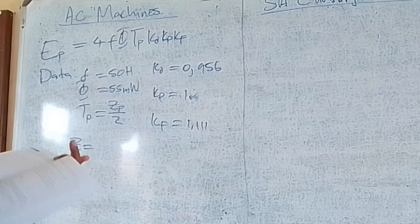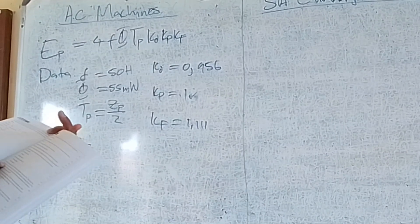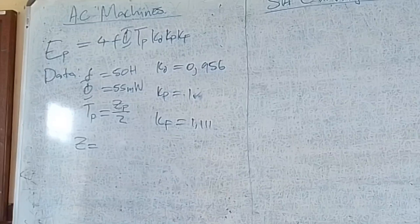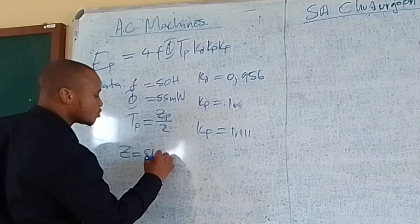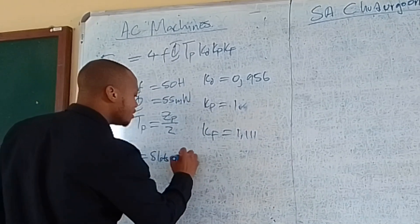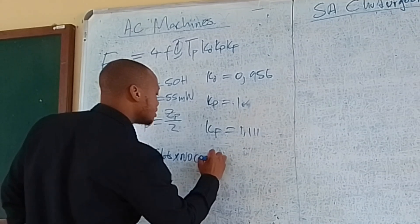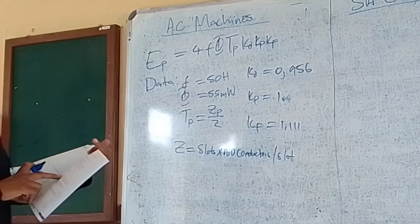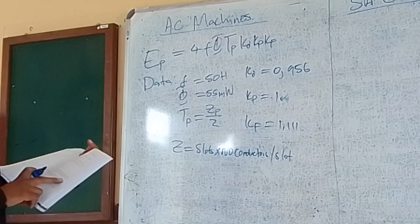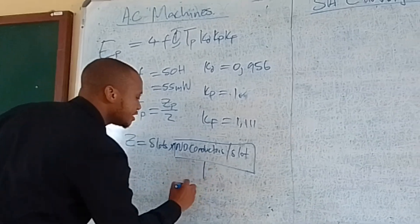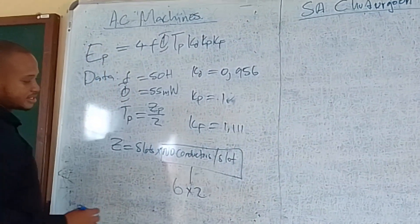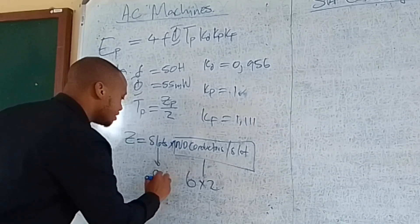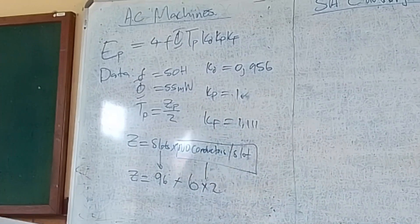The statement says the stator has a total of 96 slots, and it is a 6-turn coil which is fully pitched and double layer. Z is the product of the number of slots multiplied by the number of conductors per slot. This term is equal to 6 multiplied by 2 for the double layer. The number of slots is 96, so Z equals 96 times 12.